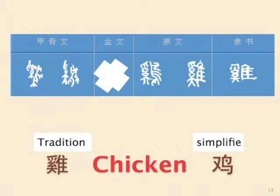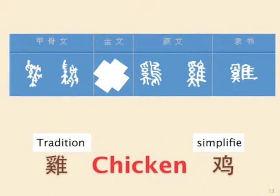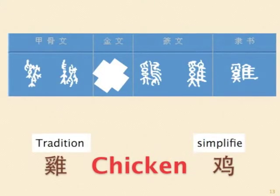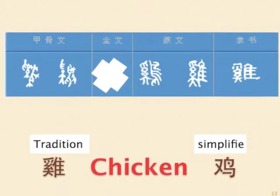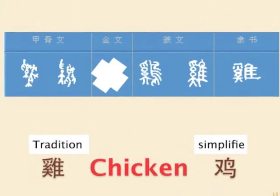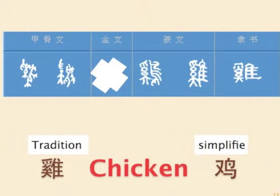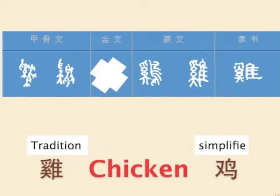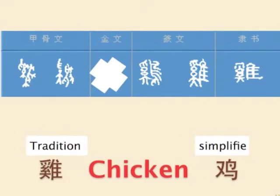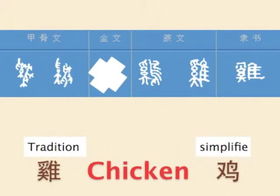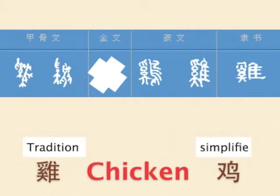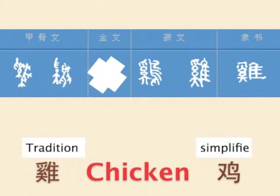Next word: chicken. The original meaning is the kind of big bird captured by a person to be kept at home. The left part of the word stands for a person using a rope to tie up a bird on his right side. The simplified form greatly reduces strokes on the left side while using the simplified word for bird on the right side.